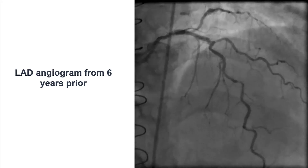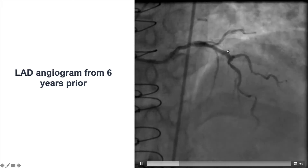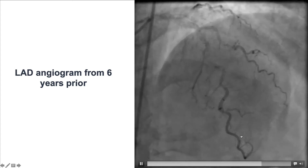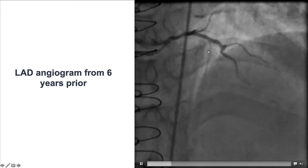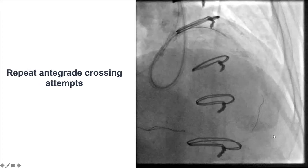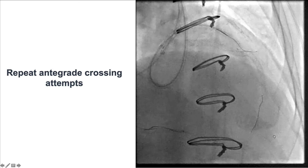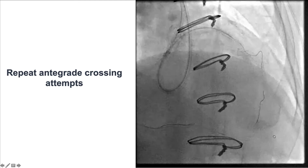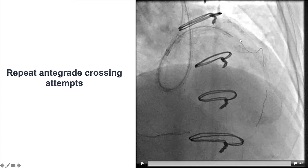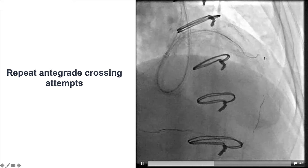In the meantime, we reviewed previous angiograms from six years prior showing the course of the LAD when it was still patent. We could appreciate the significant tortuosity of the vessel. Based on this angiogram, we performed more antegrade injections through the microcatheter and were able to appreciate that the vessel was coursing superiorly and then downward — highly tortuous, as suggested by the previous angiogram.